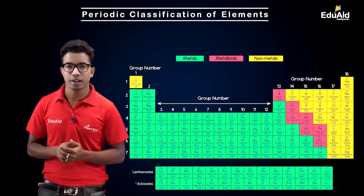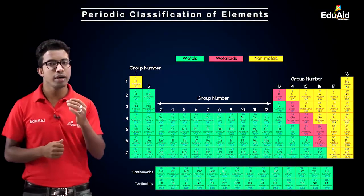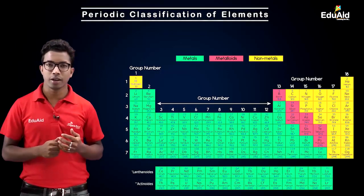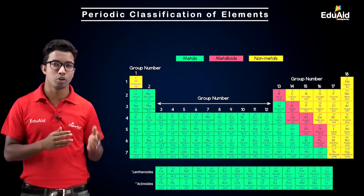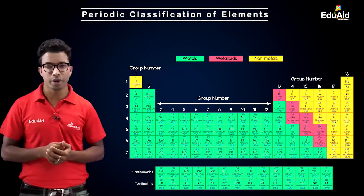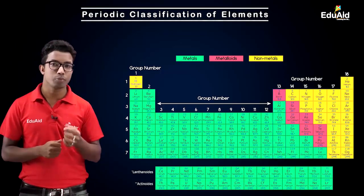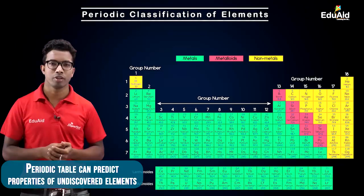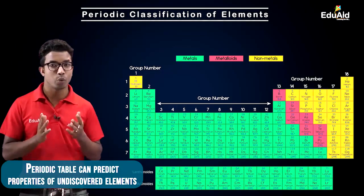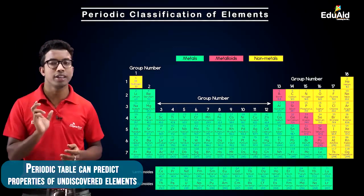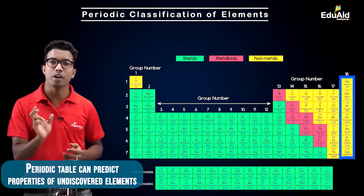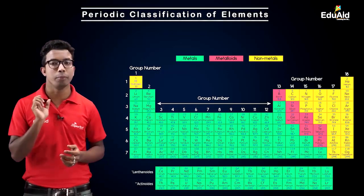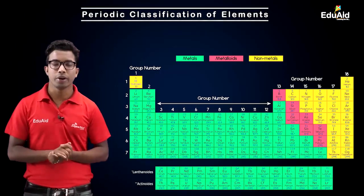The second role is that in the periodic table, elements are arranged according to their properties — similar elements are arranged in similar groups. By using this, we can predict the properties of elements that have not been discovered yet. Isn't it amazing that we can predict the properties of elements which are not discovered till now? This is definitely one of the biggest advantages of the periodic table.